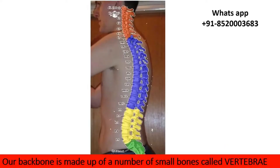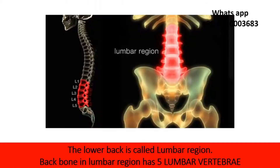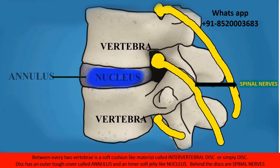Our backbone is made up of a number of small bones called vertebrae. The lower back region is called the lumbar region. The backbone in the lumbar region has 5 lumbar vertebrae. Between every two vertebrae is a soft cushion-like material called an intervertebral disc, or simply disc.